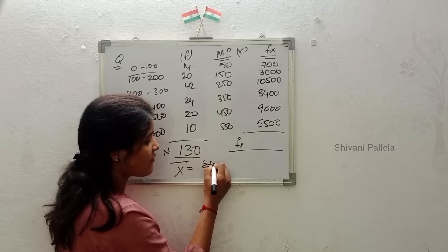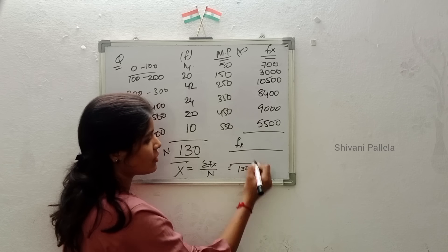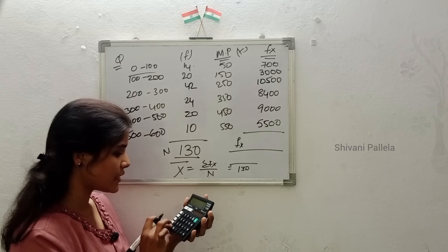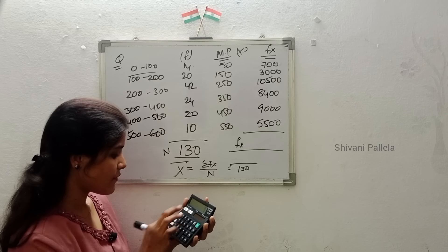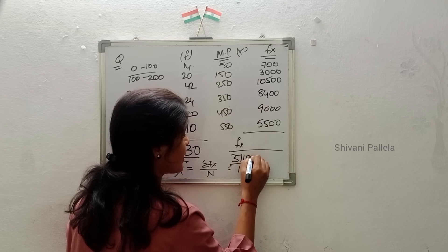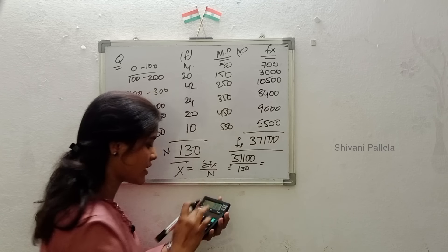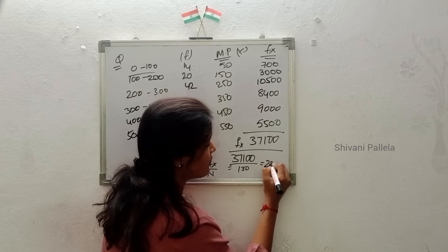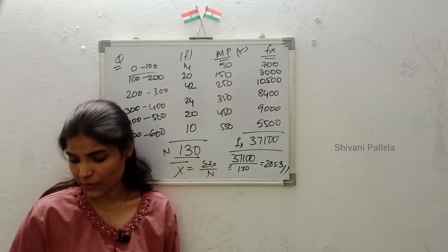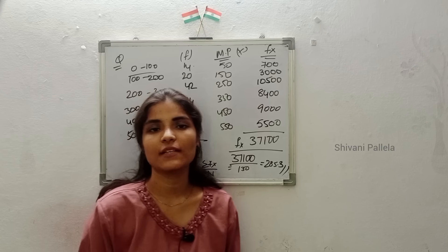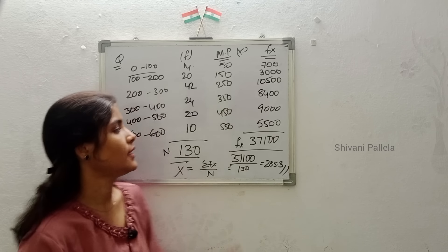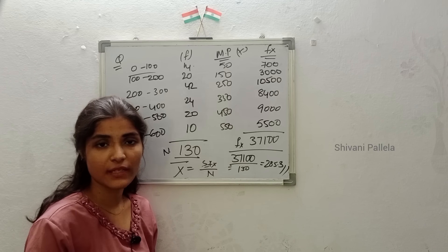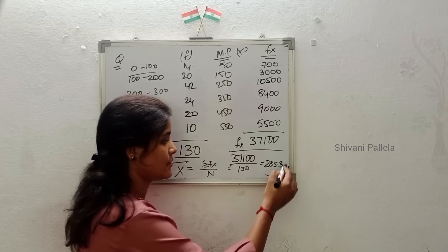The formula for x̄ is σfx divided by n. n equals 130. The total of fx is 700 plus 3,000 plus 10,500 plus 8,400 plus 9,000 plus 5,500 equals 37,100. So x̄ equals 37,100 divided by 130 equals 285.3. That is the mean answer. If they ask 'calculate arithmetic mean using direct method,' do it exactly like this — marks column, frequency, midpoints, and fx.